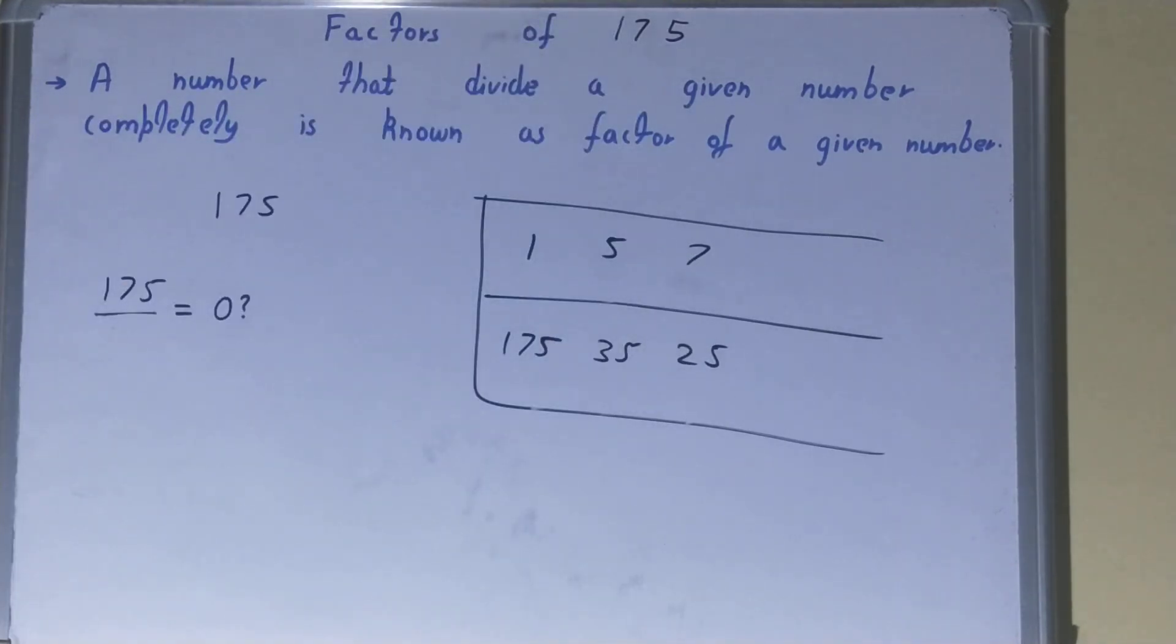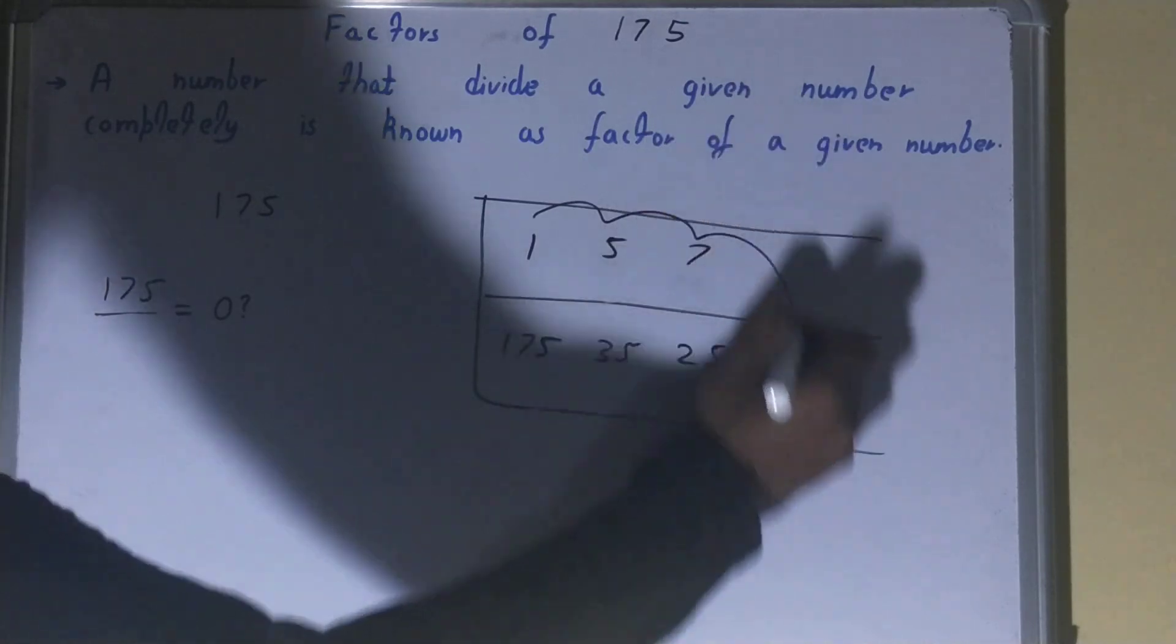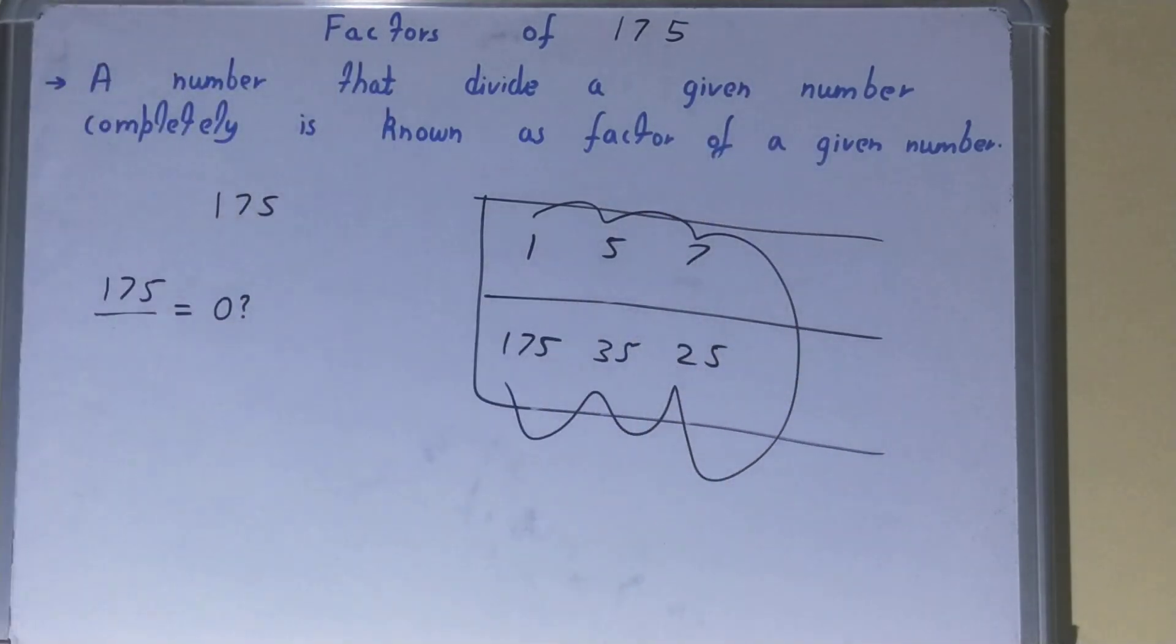And the set of factors for the number 175 will be 1, 5, 7, 25, 35, and 175. So this was all about factors of the number 175. If you found the video helpful, please hit the like button, do consider subscribing, and thanks for watching.